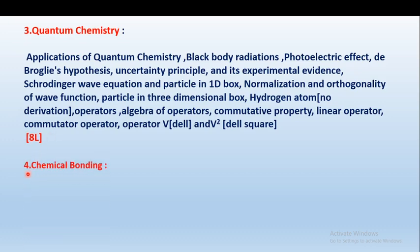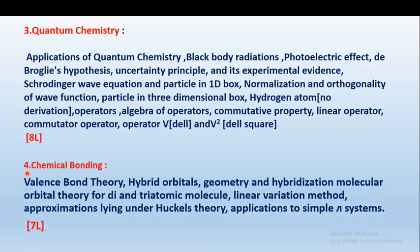The fourth chapter is chemical bonding. In chemical bonding we will cover: valence bond theory, which you may have studied at TY BSc level, hybrid orbitals, geometry and hybridization of molecular orbitals, and the valence bond theory for diatomic and triatomic molecules.